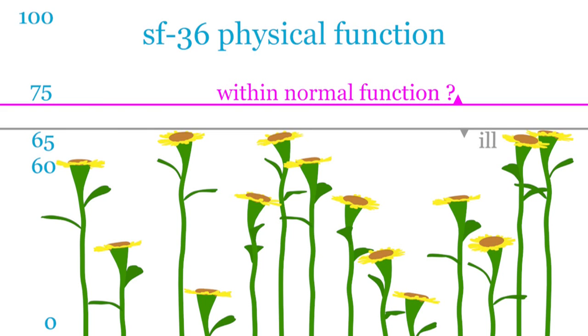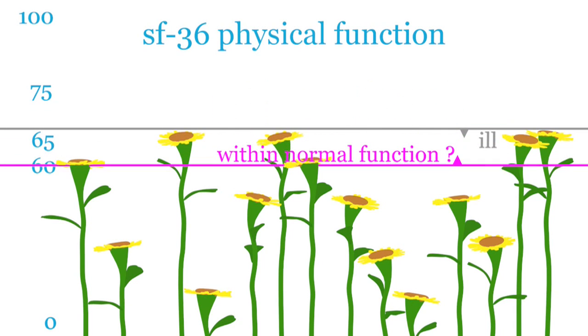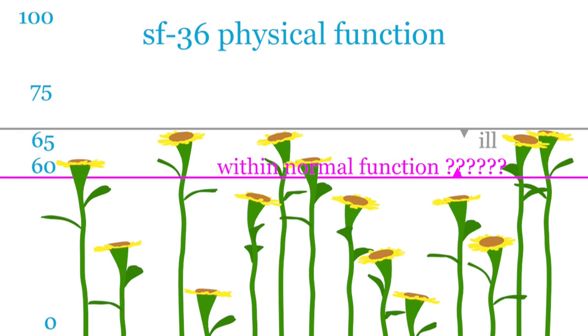Simply because once the trial was underway, they dropped the target. The level described as being within normal function was now dropped from 75 to 60. That's right, the new level was lower than the raised entry level for the trial, and we do not know how many people were already at or above this target at the start of the trial.